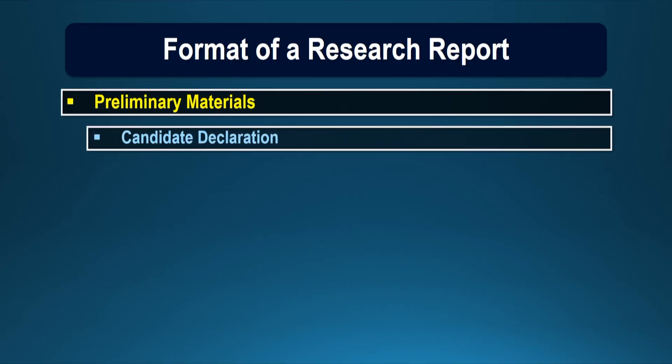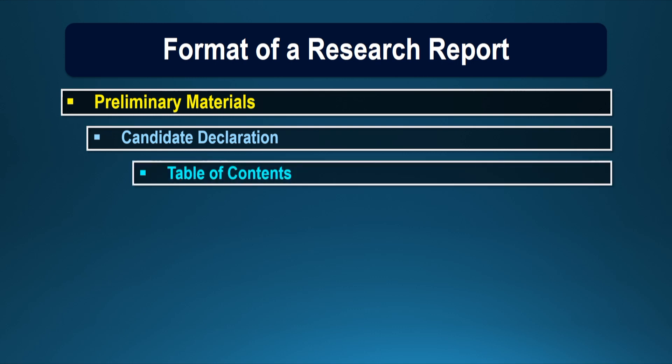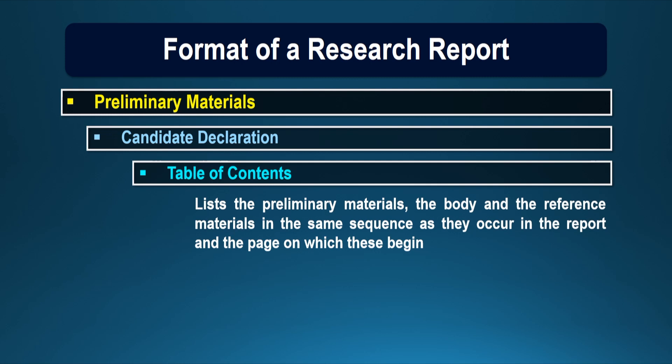Another page contains the candidate declaration that this research was carried out by himself or herself and does not contain any material taken directly from some other source. It is followed by the table of contents, which lists the preliminary material, the body, and the reference material in the same sequence as they occur in the report and the page on which these begin. This page helps readers who want to study a particular section and quickly find the page number on which that section appears.